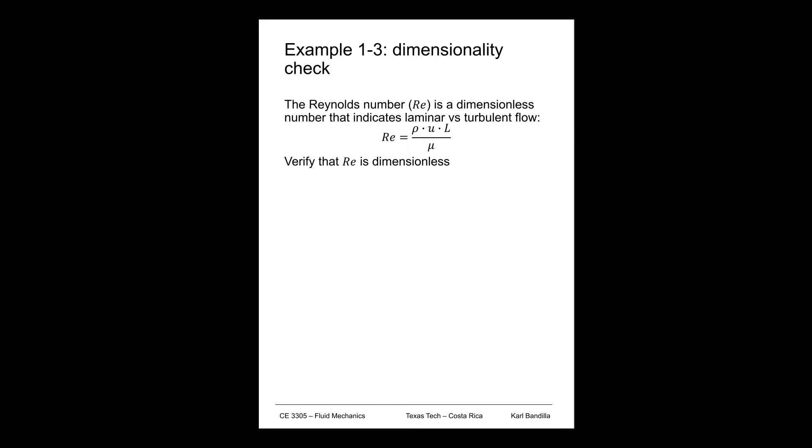This is example 1-3, dimensionality check. So the question here is, the Reynolds number Re is a dimensionless number that indicates laminar versus turbulent flow. And there's the equation given, and so now we should verify that the Reynolds number is dimensionless.